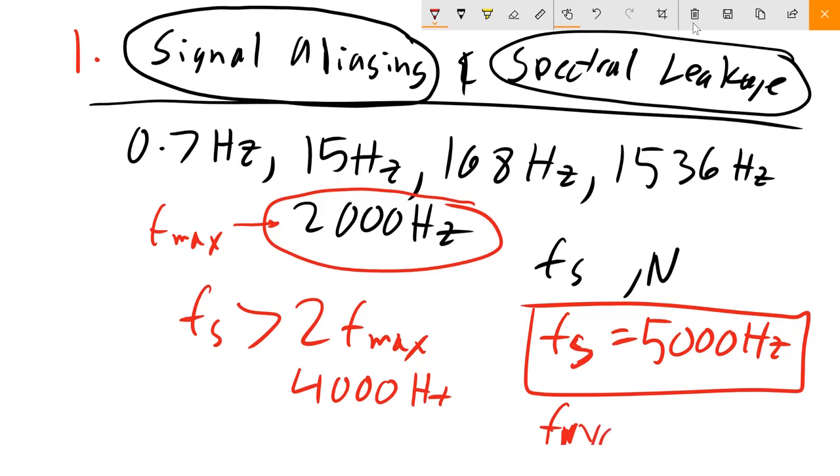What is the highest frequency we could measure once we've selected the FS? That's just FS over 2, so the largest frequency, the last point on our frequency spectrum, is going to be 2500 Hz. So that deals with signal aliasing, we're done with this one.